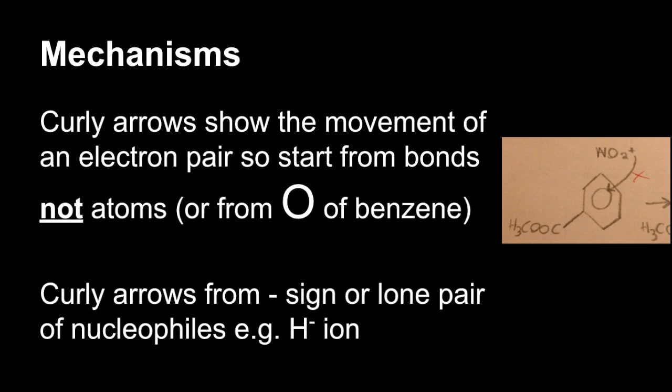So in mechanisms, curly arrows show the movement of an electron pair, so you must start them from bonds, not atoms, or from the delocalized electron cloud of benzene.